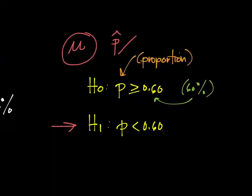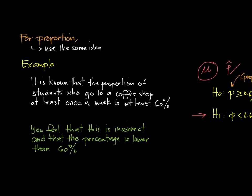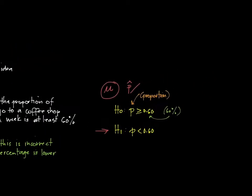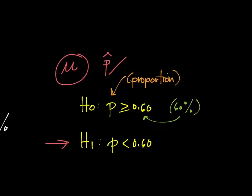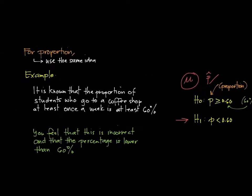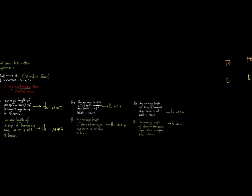The idea is the same as with the population mean. It's just that the symbol we use is different because we are talking about a proportion. We use P and not mu when writing. But how we set greater than or equal to, and how we write the reverse for the alternative hypothesis, is just the same as how we work on the population mean. That's what we covered in step number one.